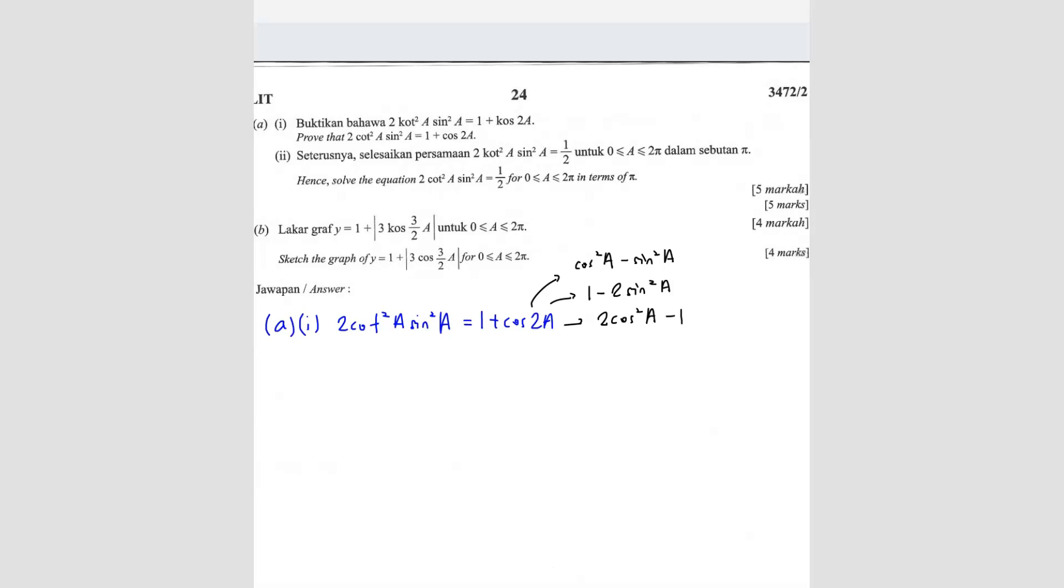So we are going to try to change this so that we can find something similar to this. So we are going to do that. So we start with the left-hand side. So left-hand side, we've got 2 cot square A sine square A.